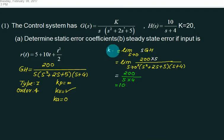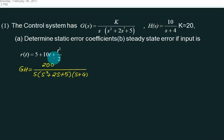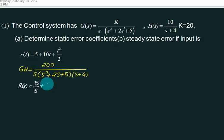What is Ka? Ka equals limit s² · GH. One of the s's cancels, and this value is 0. So write: r(t) equals 5 plus 10t plus t²/2. So what is R(s)? R(s) is 5/s plus 10/s² plus 1/s³.